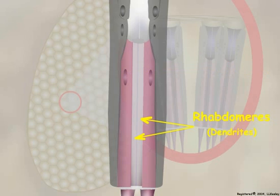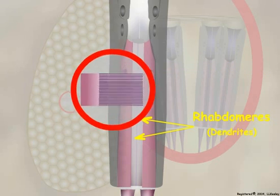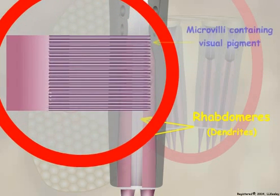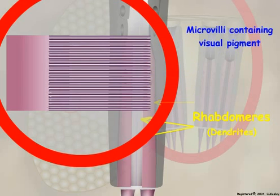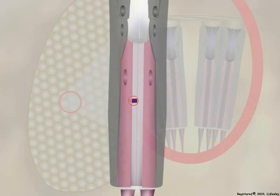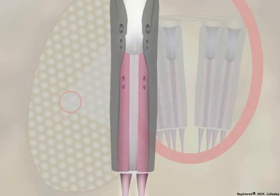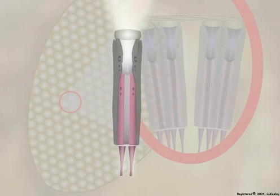Rhabdomeres consist of parallel microvilli containing light-detecting visual pigment molecules embedded into their plasma membranes. Light entering the cornea and cone of an ommatidium is focused on and detected by visual pigments embedded in the rhabdomere membranes of the retinula cells.